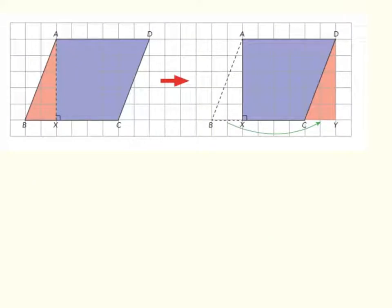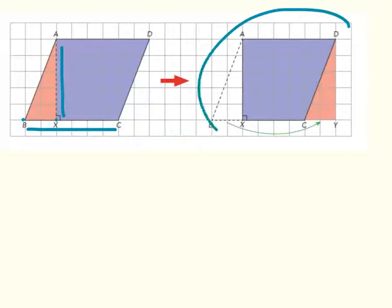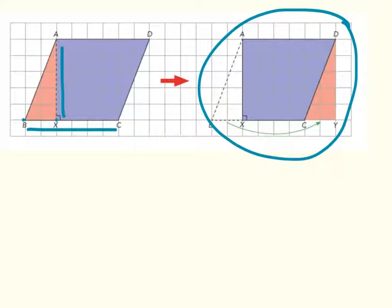Figure ABCD is a parallelogram with a base BC and a height AX. If we cut out triangle ABX and move it to the side where AB is placed against DC, rectangle AXYD is formed. These two figures cover the same area. Therefore, we will calculate the area of the parallelogram in exactly the same way we would calculate the area of a rectangle: base times height.